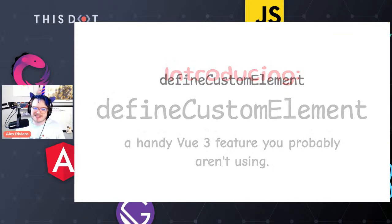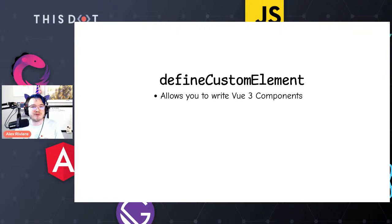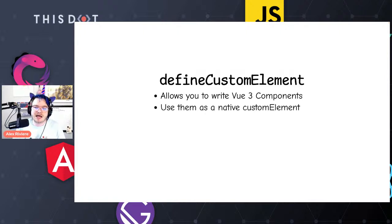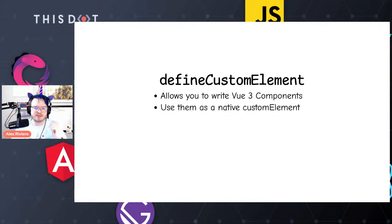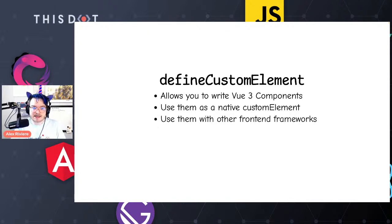Introducing defineCustomElement — a handy Vue 3 feature you probably aren't using. This allows you to write Vue 3 components and use them as native custom elements. Custom elements are the technical term for what we commonly call web components. It allows you to have shadow DOM, scoped styles, and all of that stuff built into the browser. The browser recognizes it as an HTML element, and it lets you use it with other front-end frameworks.